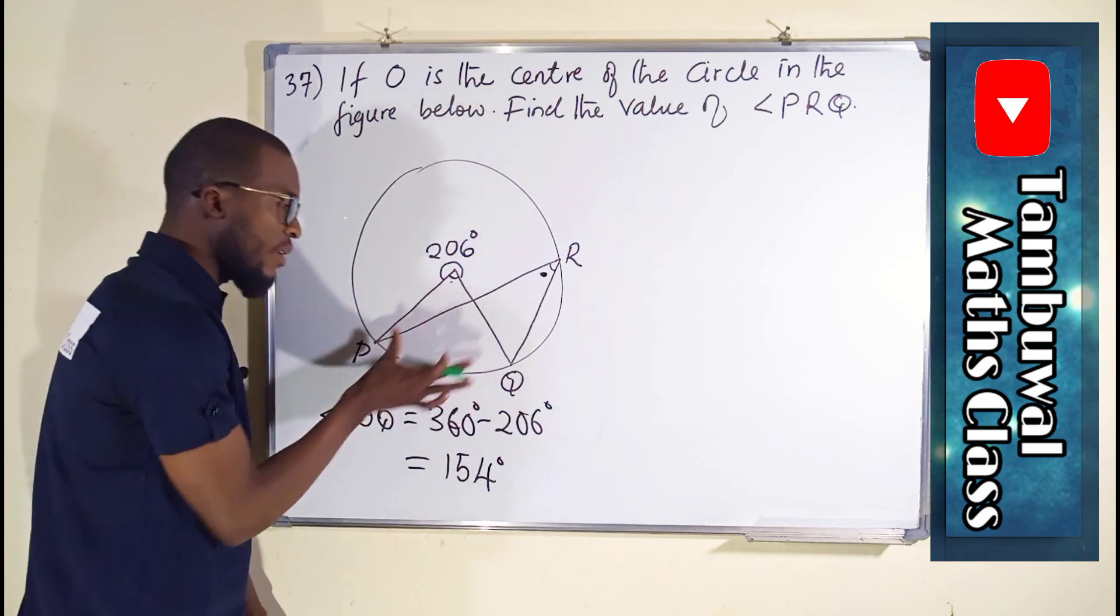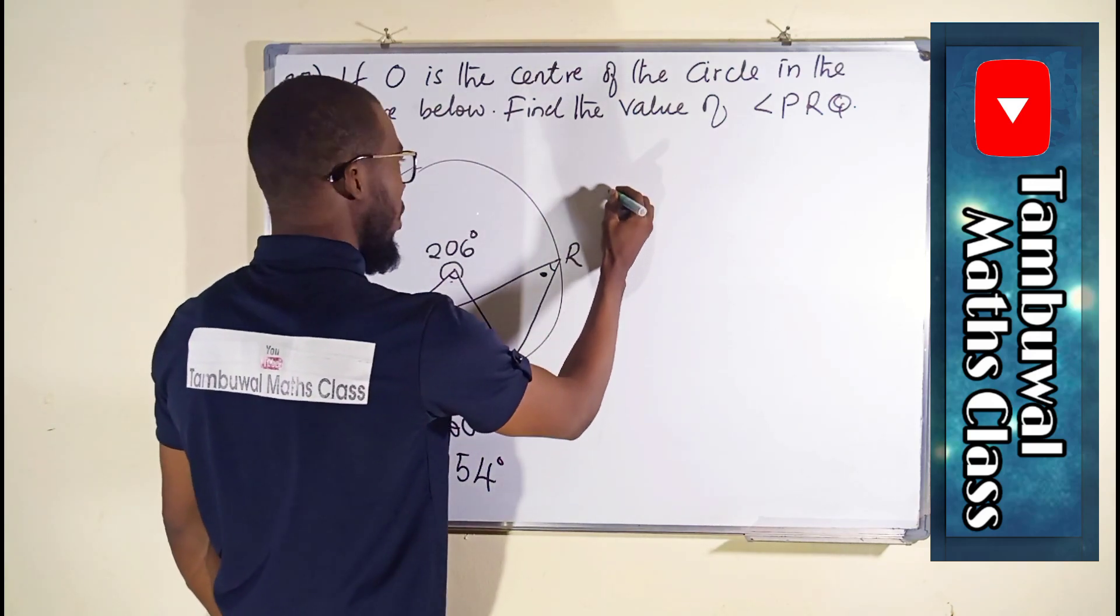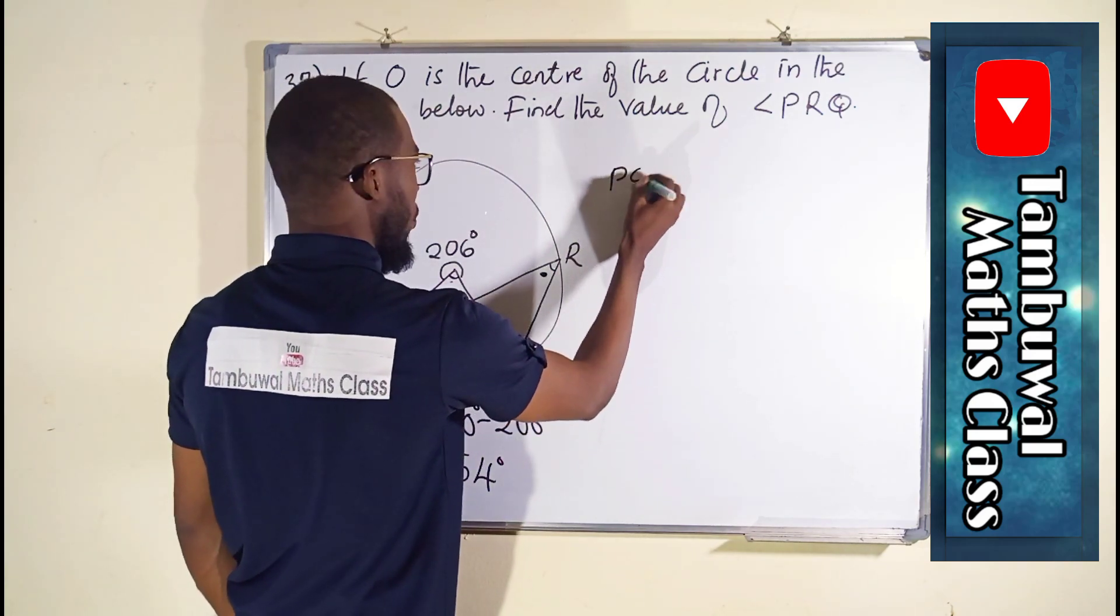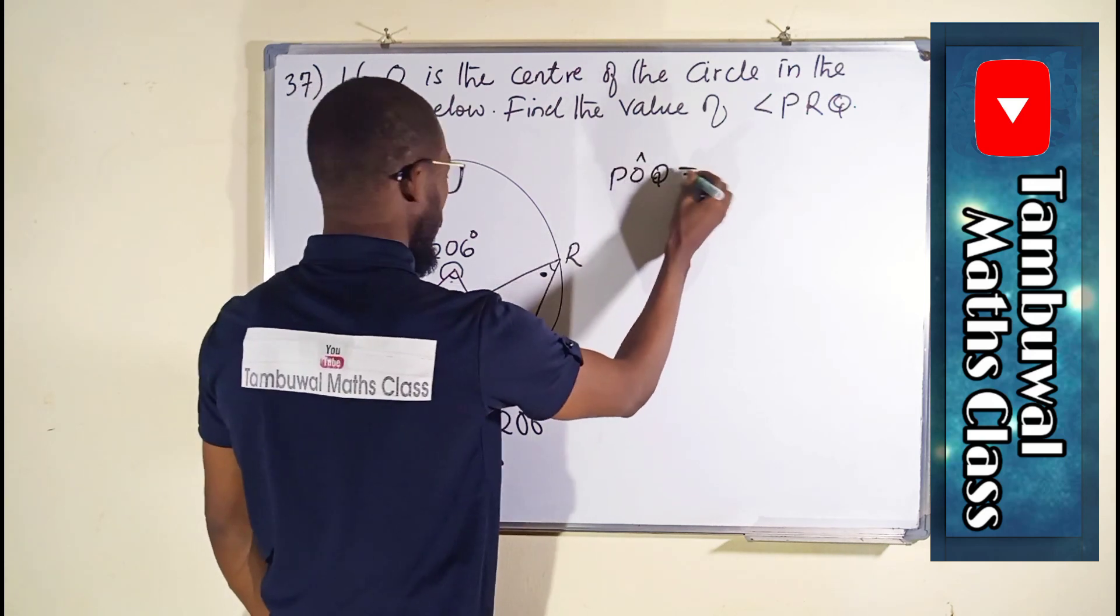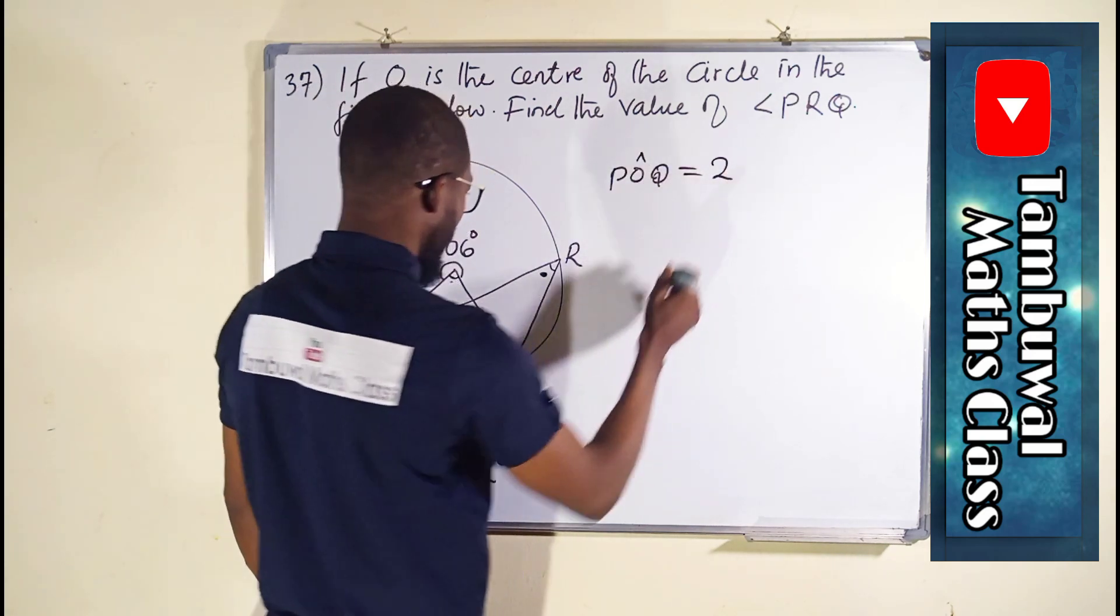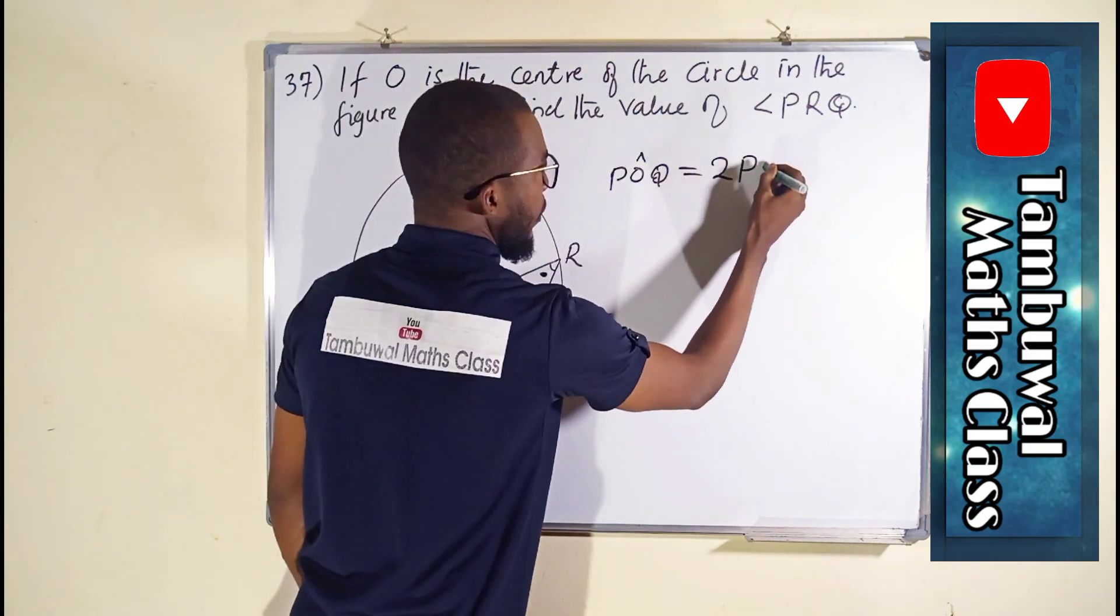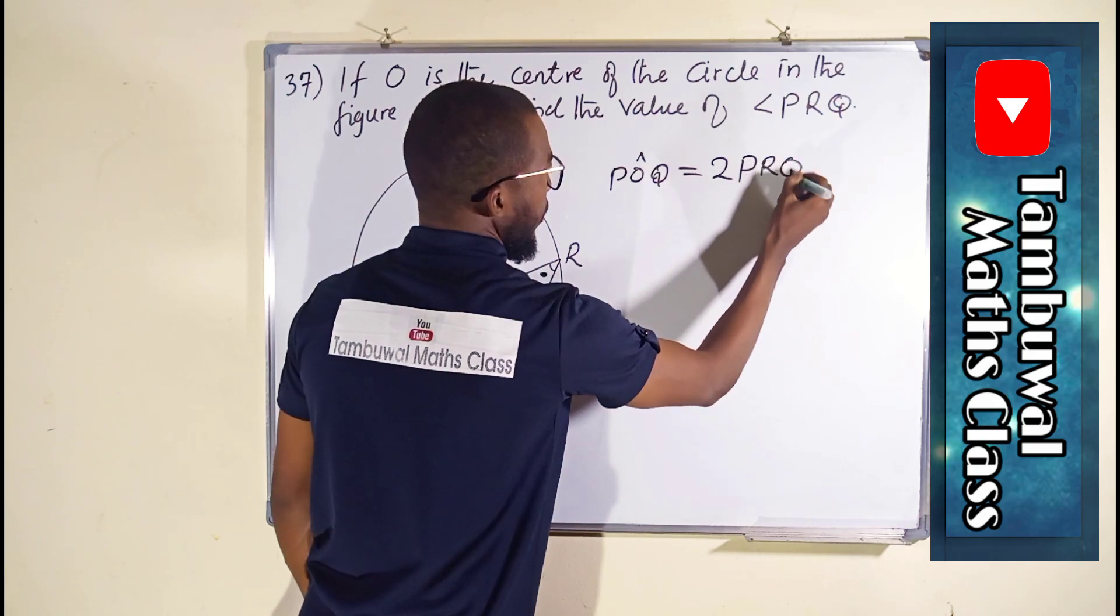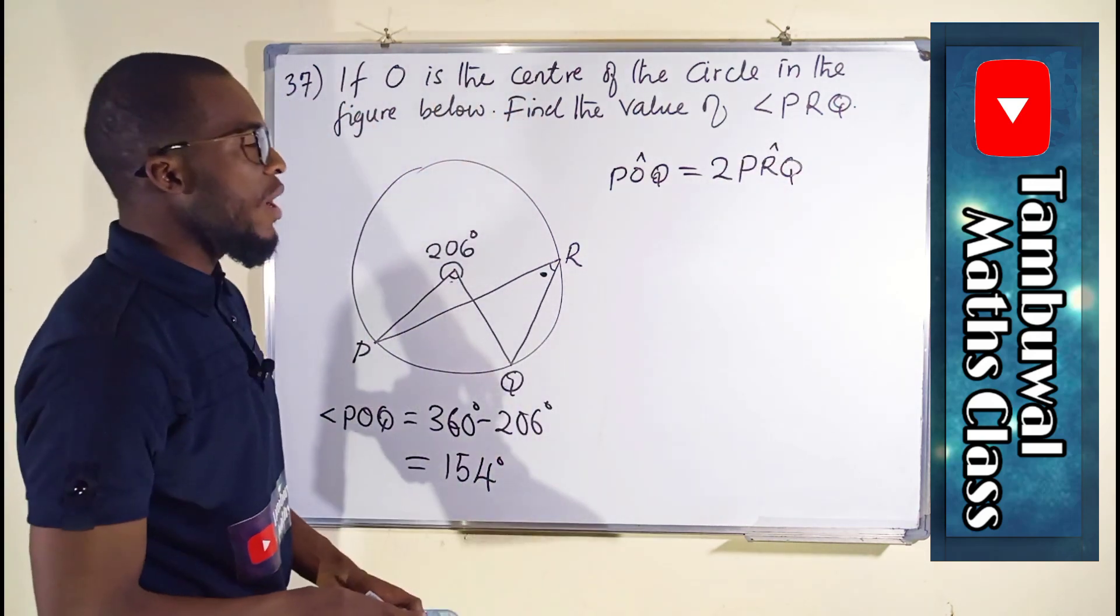And remember we say this is twice than this. This is how it is. Angle POQ is twice the angle PRQ.